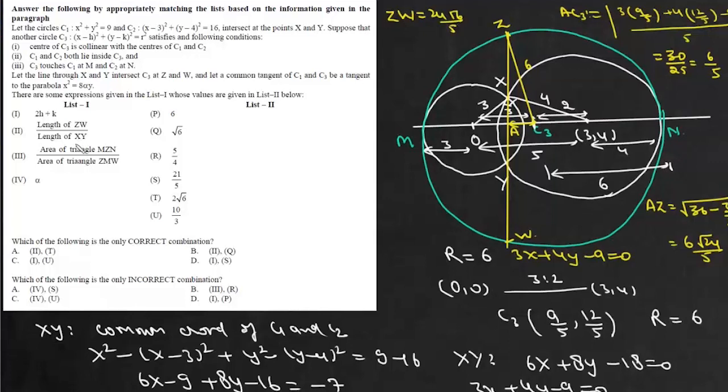Now we also have to find XY. Now for XY we have to find this distance OA and we know that OA it will be 9 by 5. And this XY will be 2 times under root of 9 minus 81 by 25. So this is 225 minus 81, 144 so there will be 24 upon 5.